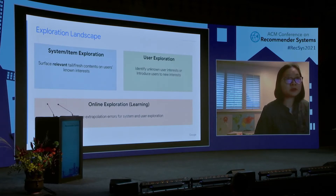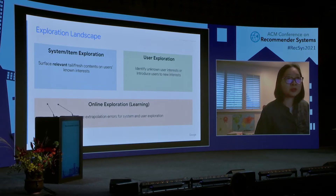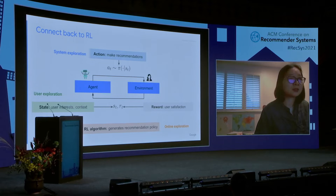We believe exploration is the key to move away from this feedback loop and truly optimize for the long-term user experience on recommendation platforms. We see three different roles exploration can play: first, system exploration, which focuses on surfacing tail and fresh content based on users' known interests; second, user exploration, which focuses on identifying unknown user interests or introducing users to new interests; and third, online exploration, where the goal is to utilize real-time user feedback to reduce extrapolation error. Connecting to RL, system exploration helps the agent understand the action space, user exploration helps understand the underlying user state, and online exploration improves the efficiency of the RL algorithm to generate a better recommendation policy.